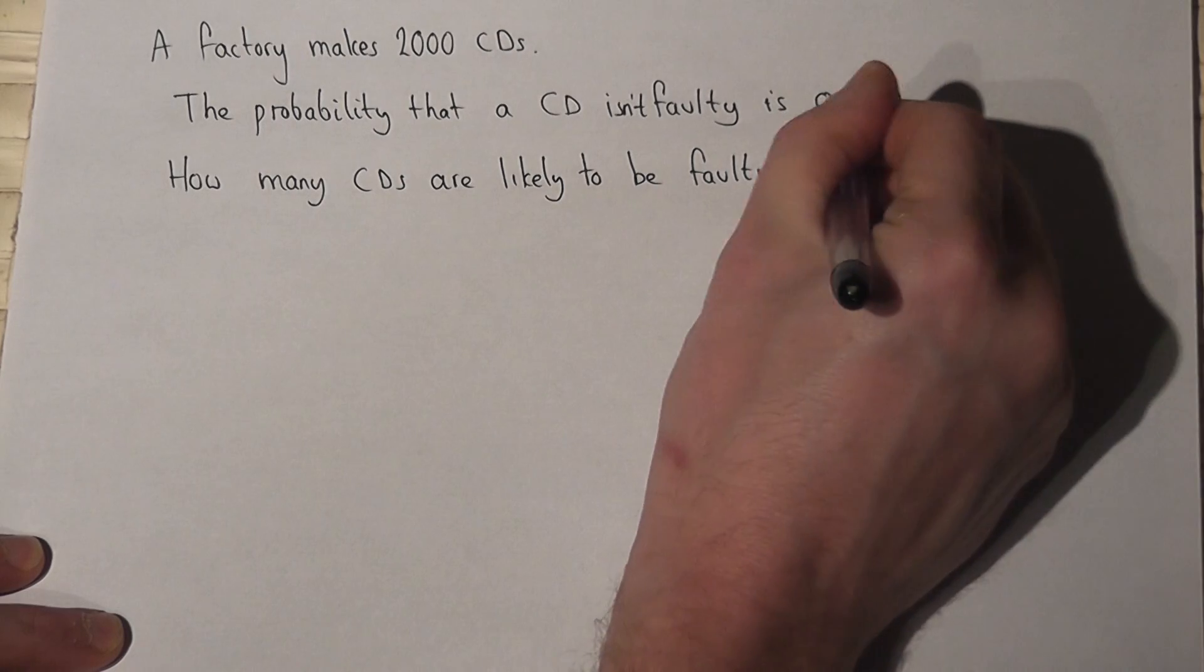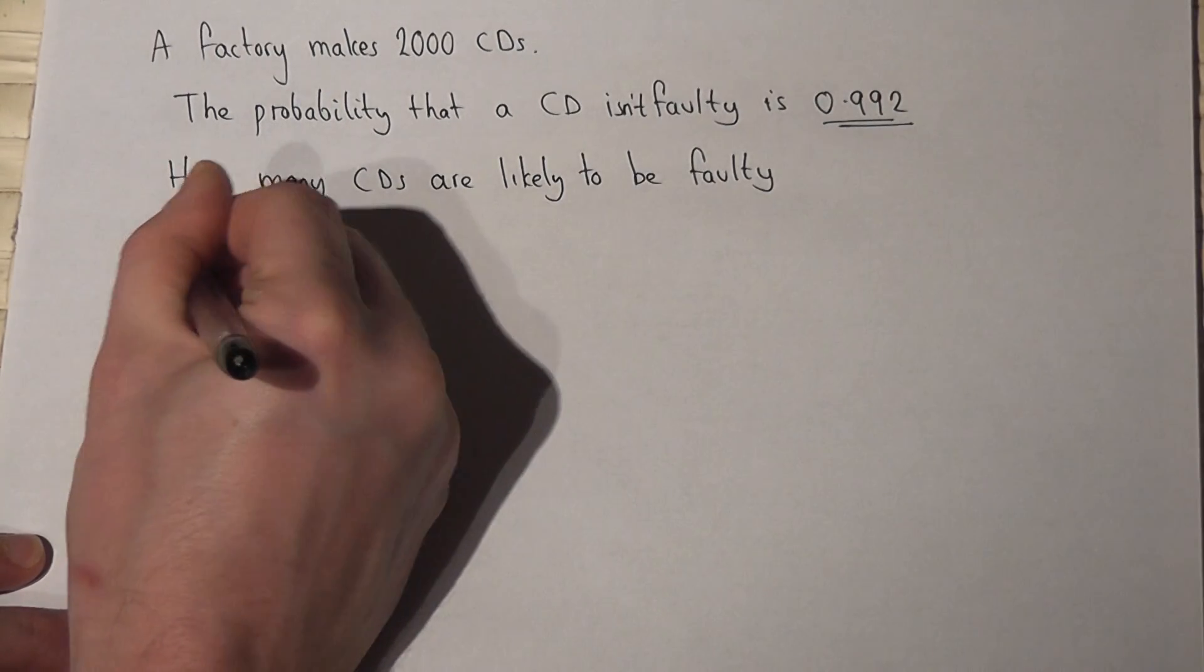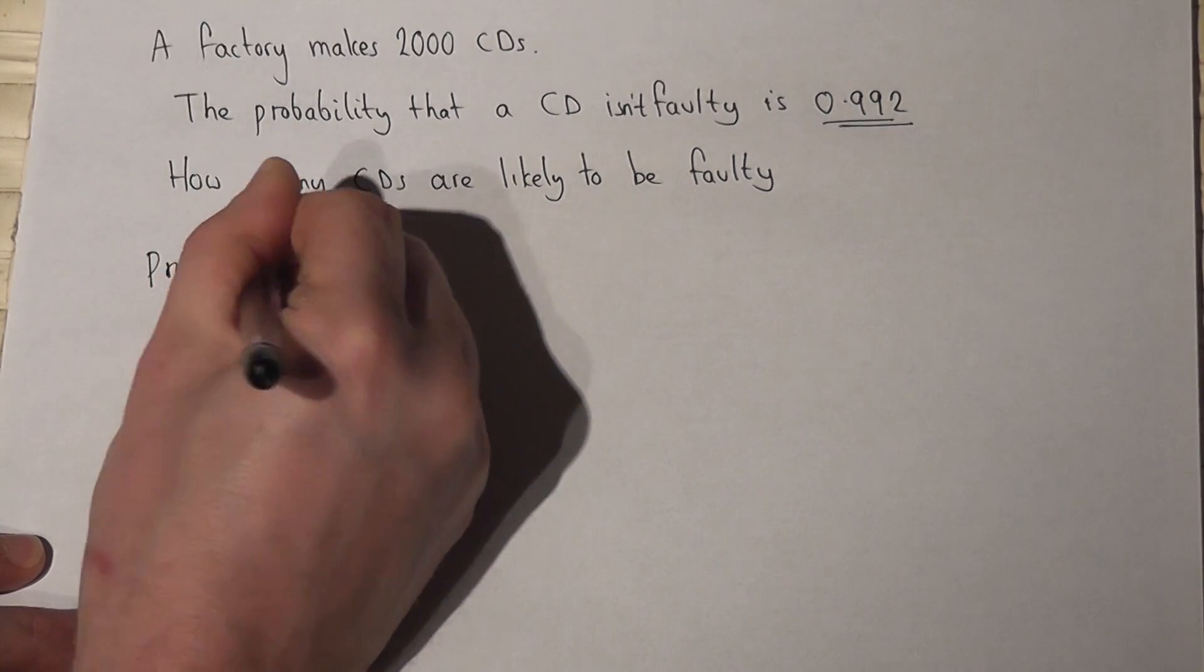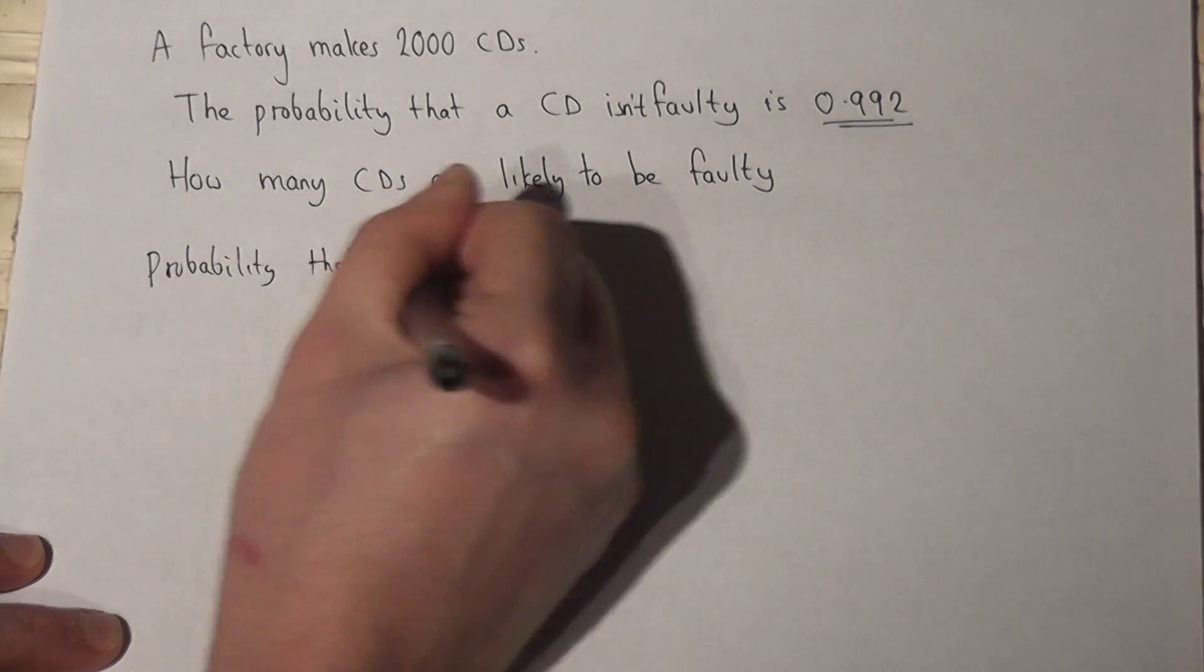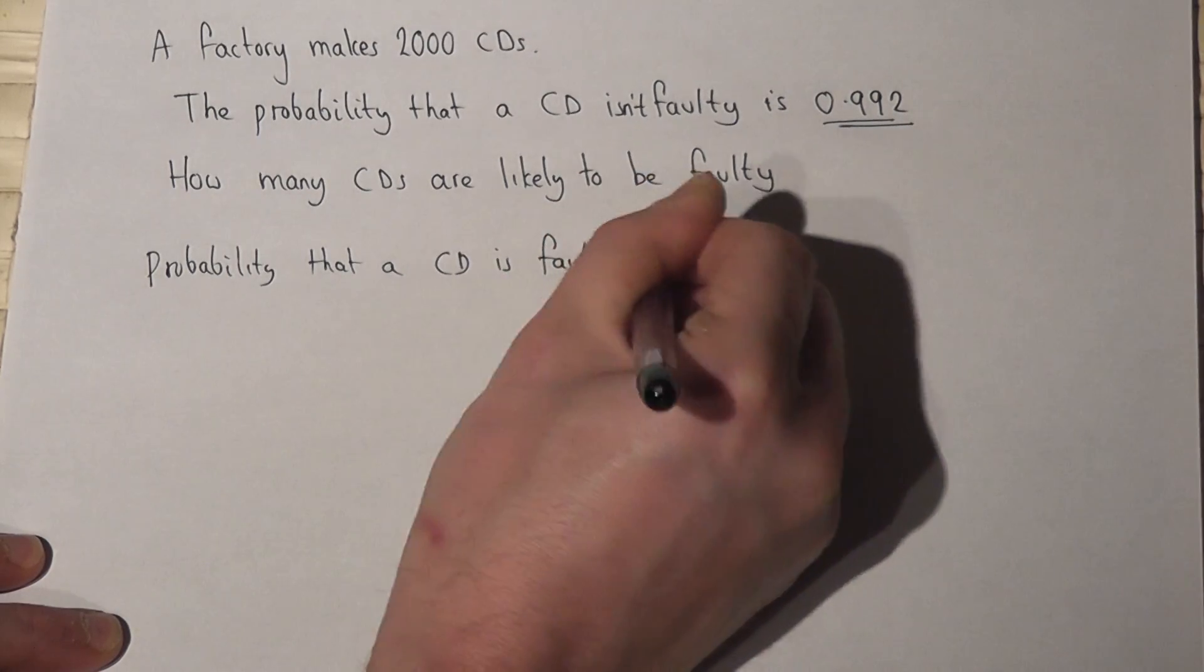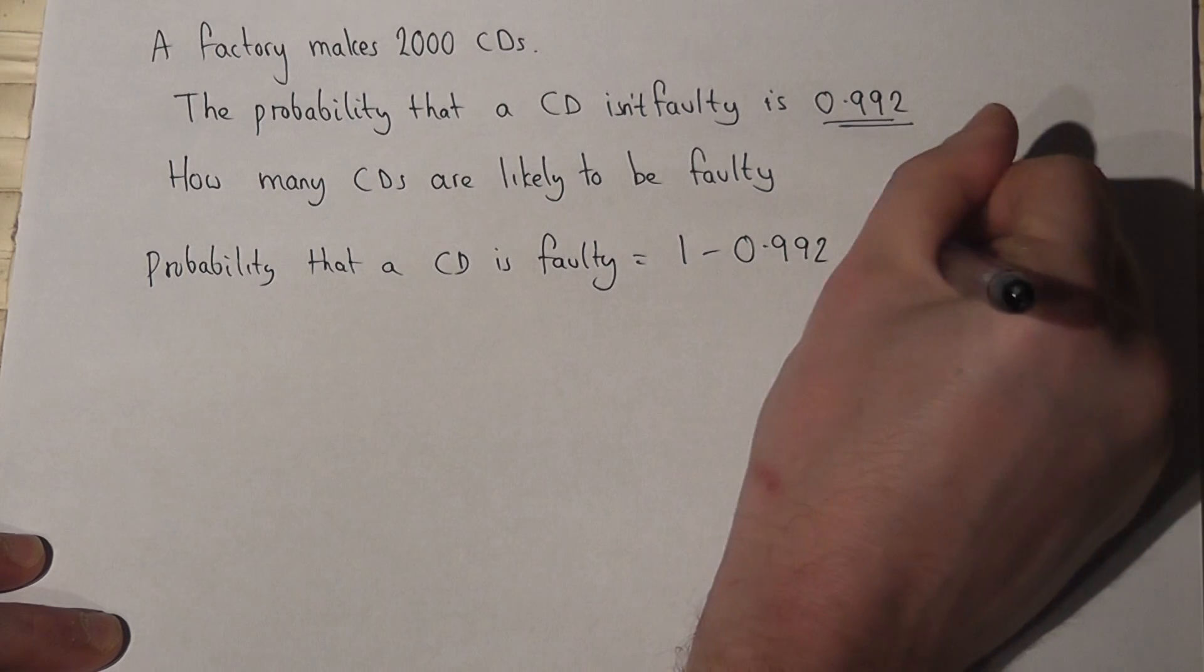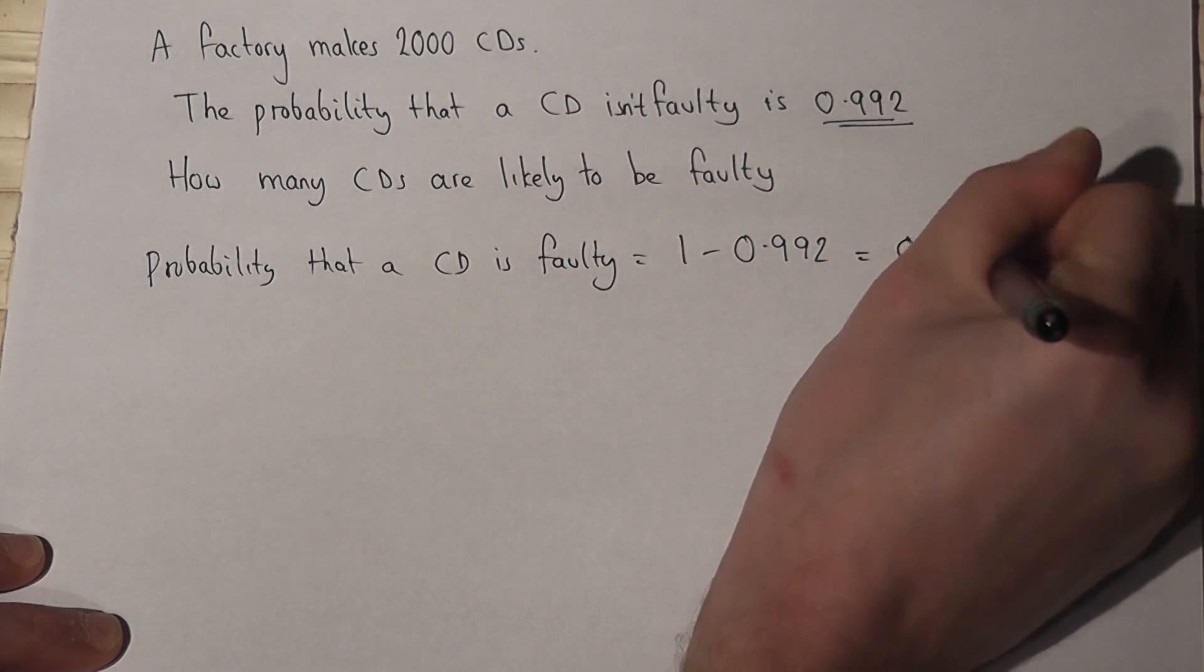Well, this is for those which are not faulty. So the probability that a CD is faulty will be 1 minus 0.992, which is 0.008.